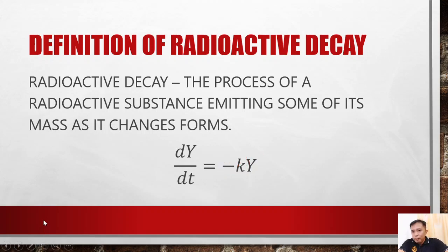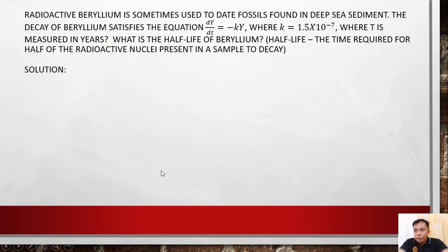We will be investigating a sample. Radioactive beryllium is sometimes used to date fossils found in deep sea sediment. The decay of beryllium satisfies the equation dy over dt equals negative ky, where k equals 1.5 times 10 to the power of negative 7, and t, or time, is measured in years. So what is the half-life of beryllium?